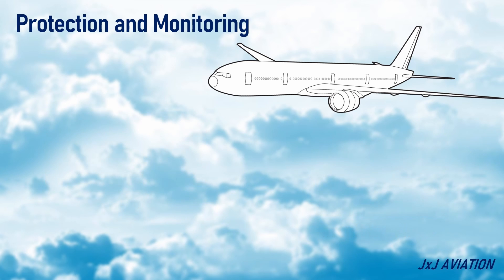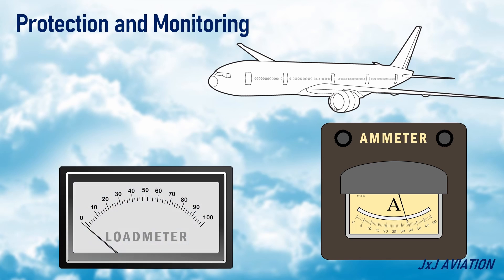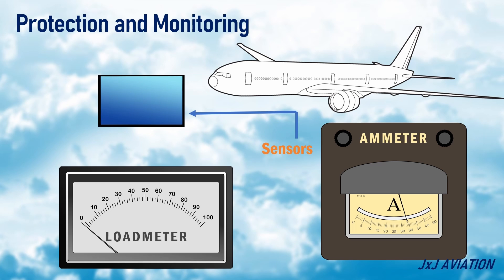To monitor the electrical system, an ammeter or load meter may be installed. This is used to check the power that is available from the generator, and the load acting on the generator. On modern aircraft having a digital display, different sensors pick up the output parameters and the load information, which are sent to be displayed in the cockpit.